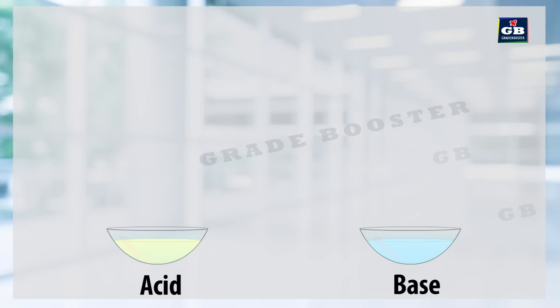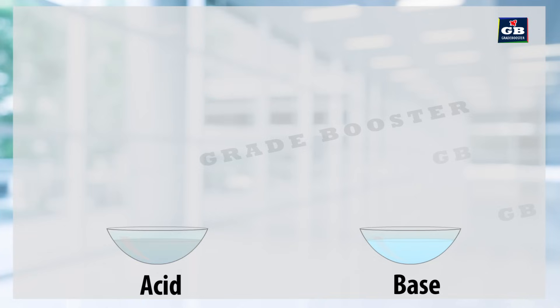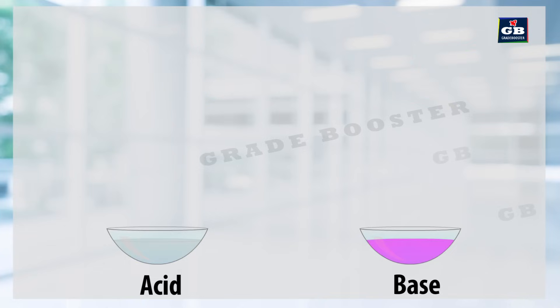When phenolphthalein is added to an acid, there is no color change observed. But if it is added to a base, its color changes to pink.